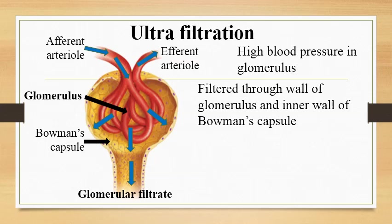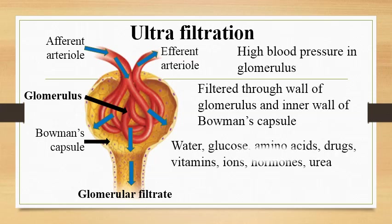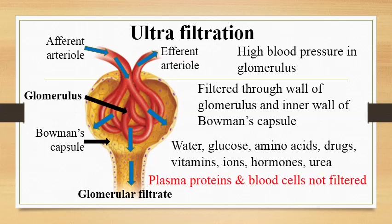The glomerular filtrate is almost similar to blood plasma. It contains water, glucose, amino acids, drugs, vitamins, ions, hormones and urea. Plasma proteins and blood cells are not filtered here.